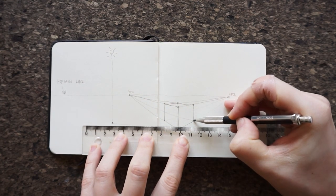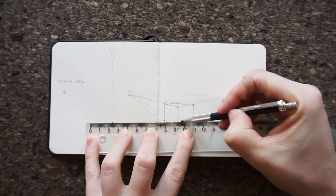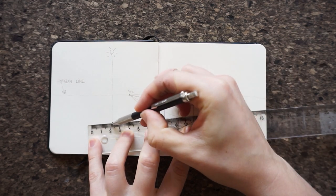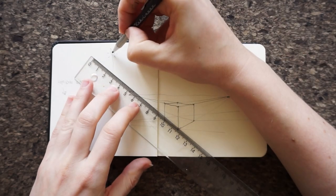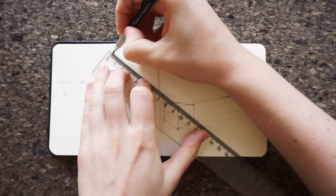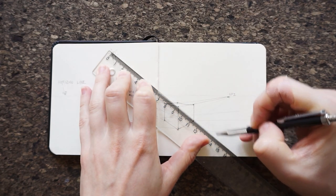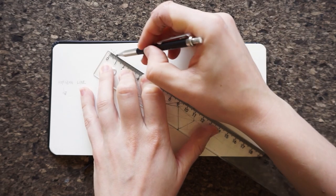Draw a thin line from the foot of the light source toward the bottom of the cube edge facing away from the light and extend beyond them. Do this also for the back edge, the one facing away from us. Do the same thing with the point of the light source and the tops of all three cube edges on the other side of the light source.